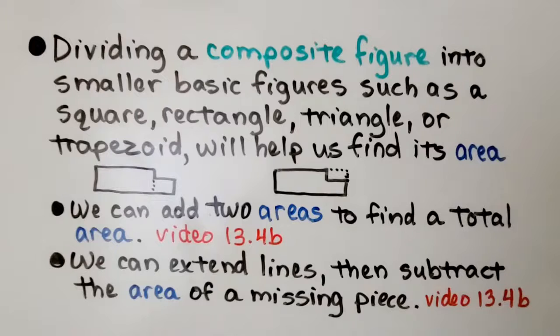Dividing a composite figure into smaller basic figures, such as a square, rectangle, triangle, or trapezoid, will help us find its area.